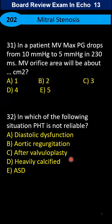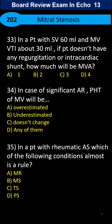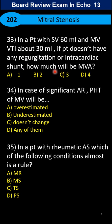In a patient where you measure stroke volume of 60 and mitral valve VTI of 30, and the patient doesn't have any regurgitation or intracardiac shunt — without any shunt or regurgitation — how much will the mitral valve area be?